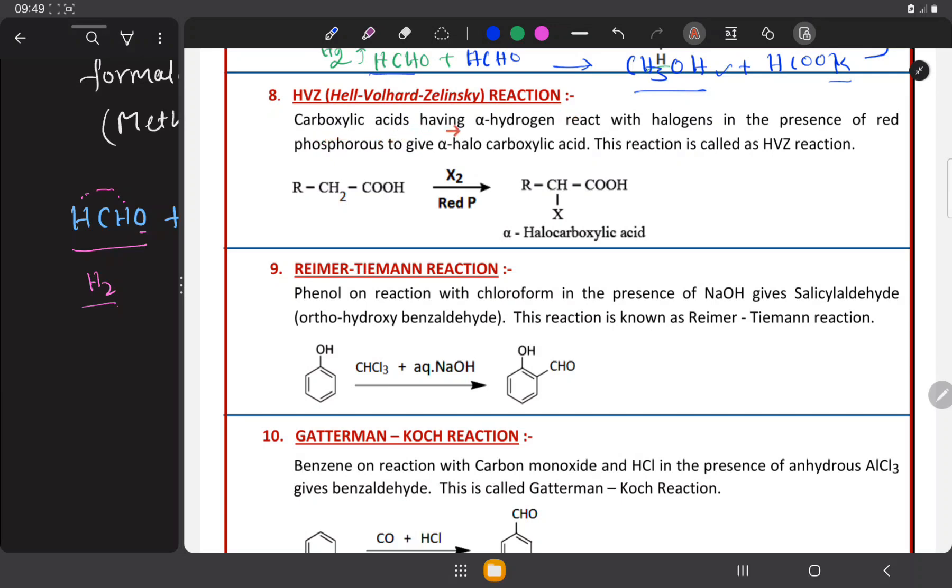Carboxylic acids having alpha hydrogens, we know what are alpha hydrogens, we have discussed in the previous videos of HVZ condensation, carboxylic acids having alpha hydrogens react with the halogens in the presence of red phosphorous to give alpha halocarboxylic acids. This reaction is called HVZ reaction.